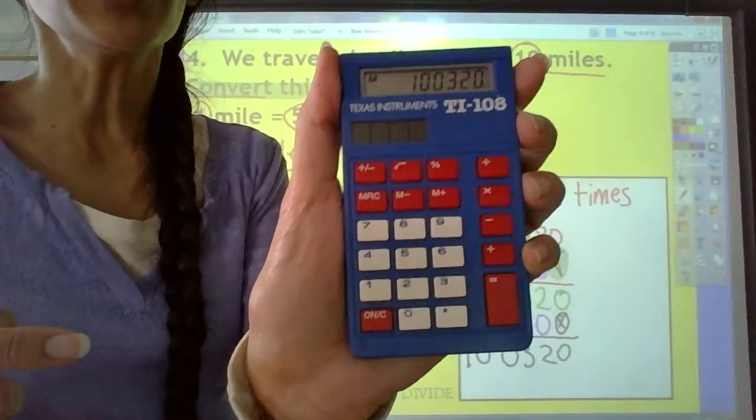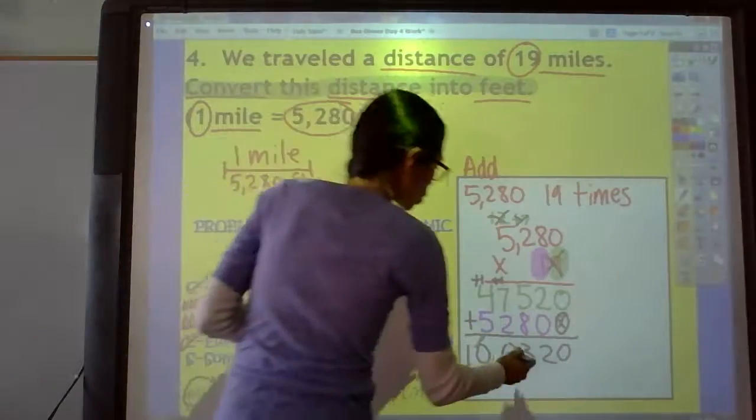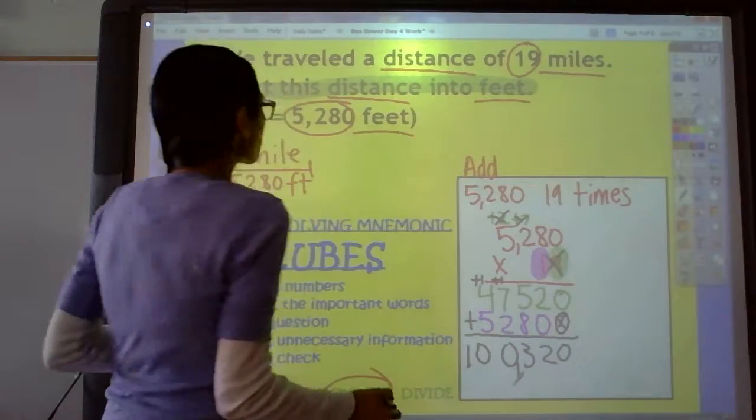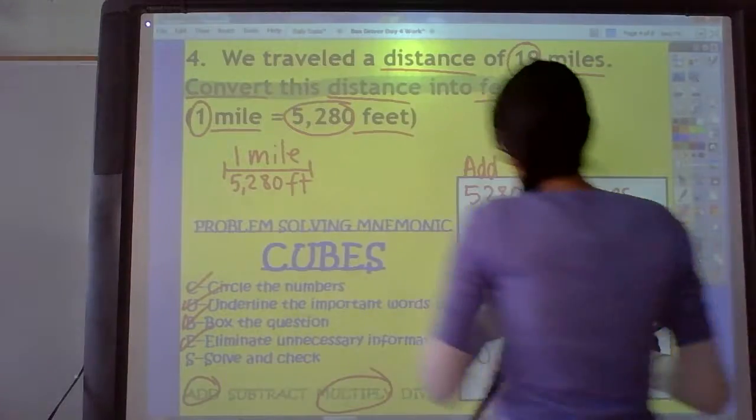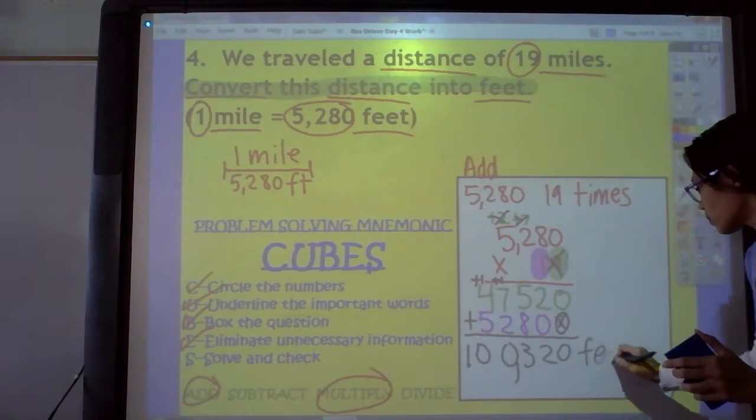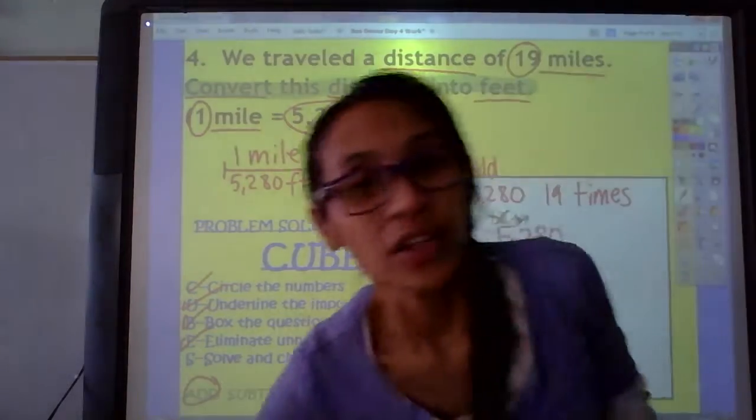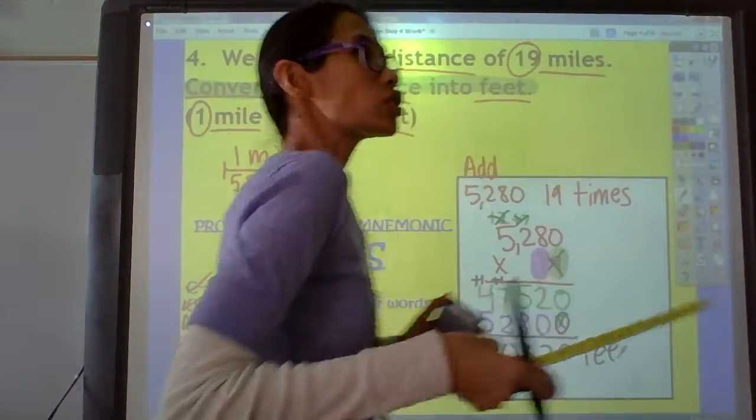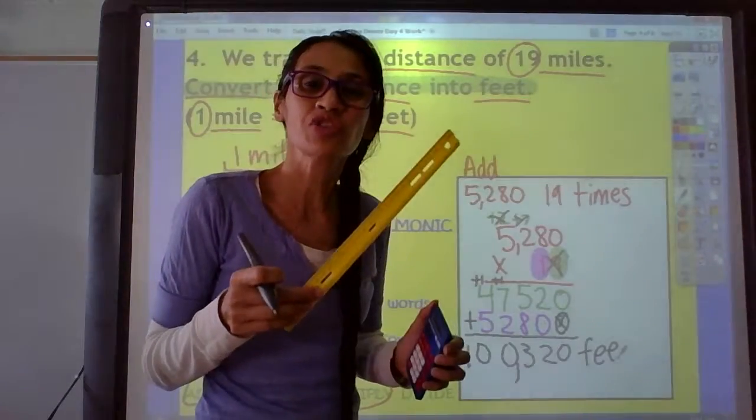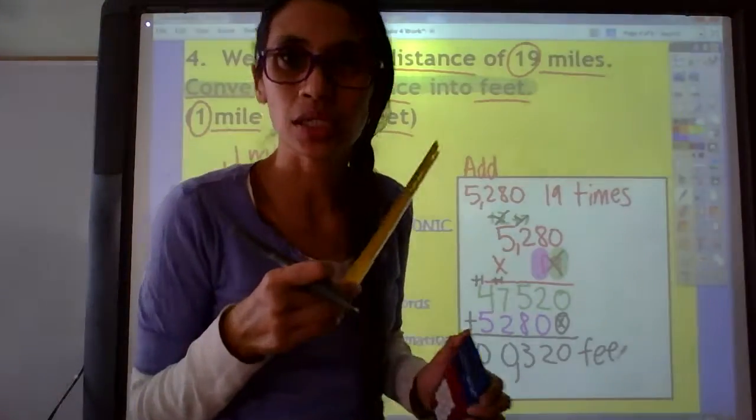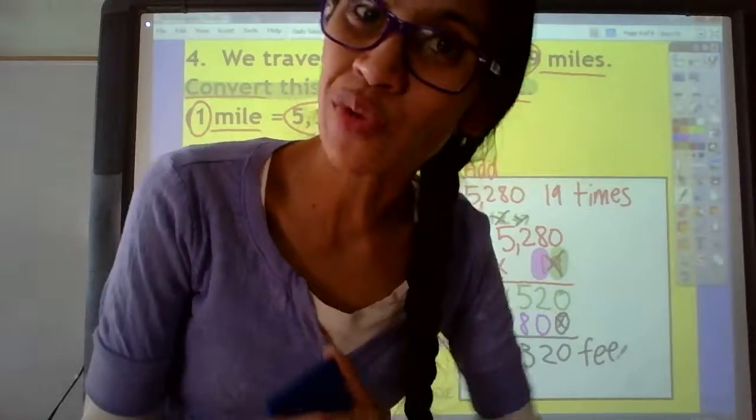100,320. We know the comma goes right there. And what is our unit? Our unit is not miles. It is feet right there. Not that kind of feet. These kind of feet. So, to travel 19 miles, I'll need 100,320 rulers. That's a lot of rulers. So, we are done with that problem.